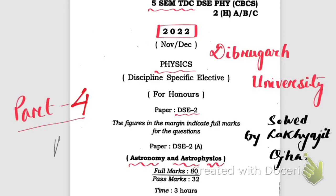Hello friends, this is part 4 of Astronomy and Astrophysics DAC2 paper 2022, fifth semester, De Brugge University. We have already solved up to question number three, so today we're gonna solve question number four and question number five.